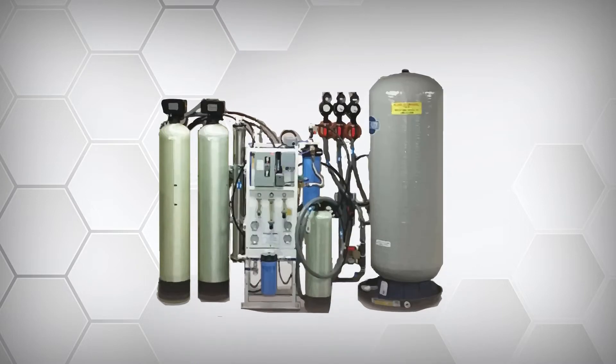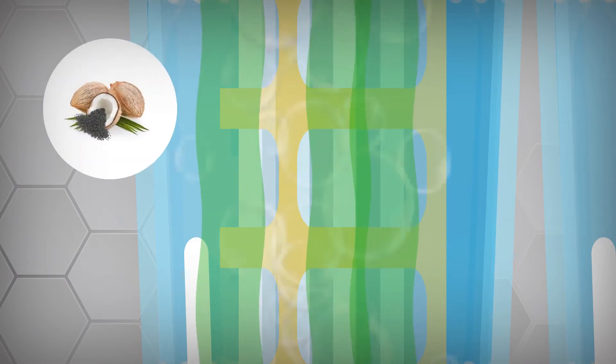We run municipal water through several filtration steps. Each step removes smaller and smaller particles. Activated coconut carbon, for example, removes volatile organic compounds. VOCs are toxic gases.